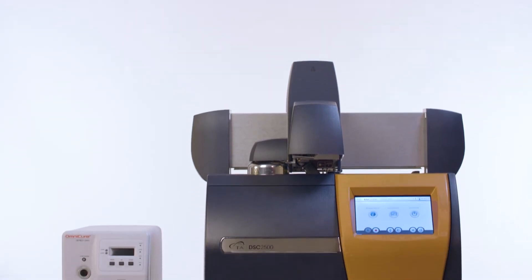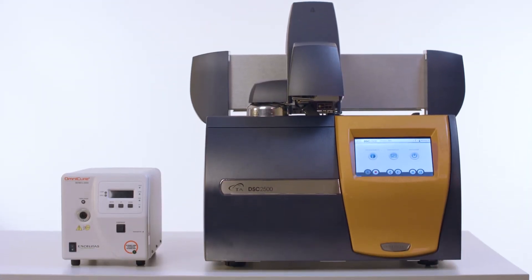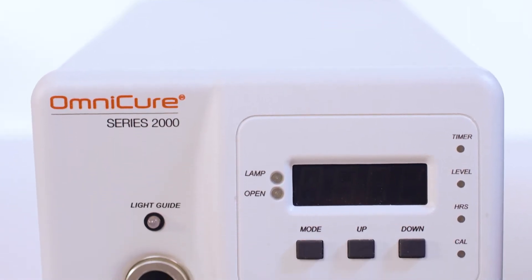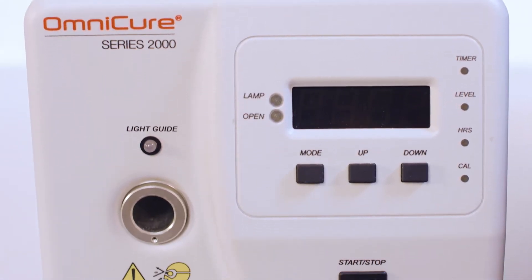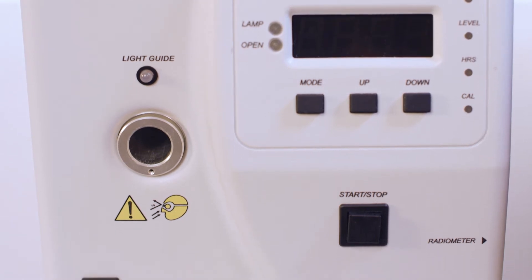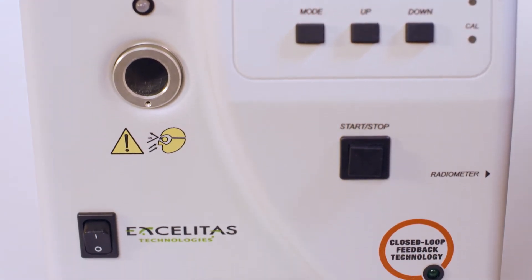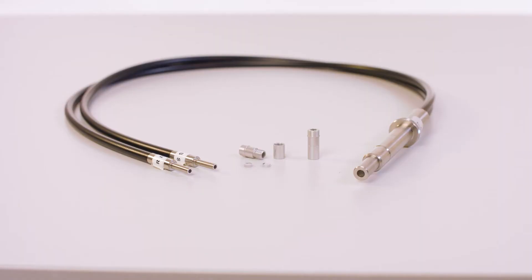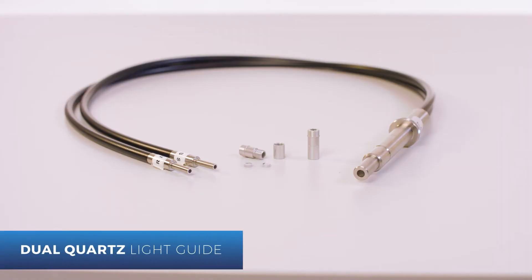The photocalorimeter accessory PCA is used with TA Instruments Discovery DSC. The accessory allows samples to be irradiated with UV or visible light inside the DSC cell. The UV or visible light is transmitted from the light source to the DSC cell via dual quartz light guide.